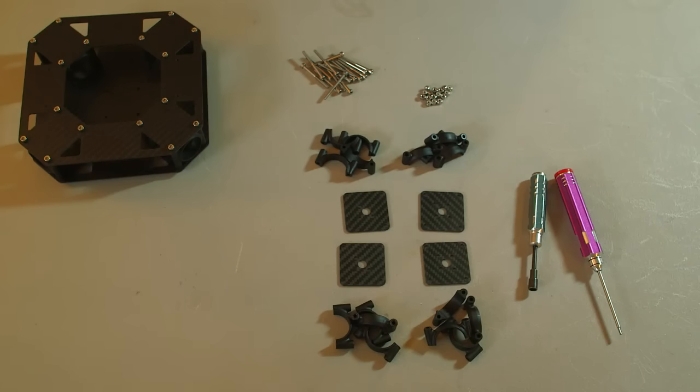To assemble the motor mounts you will need four motor mount plates, eight clamp sets, 16 35 millimeter screws, and 16 nylock nuts.